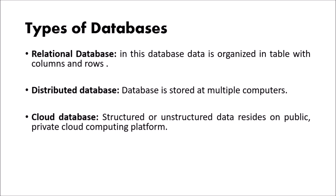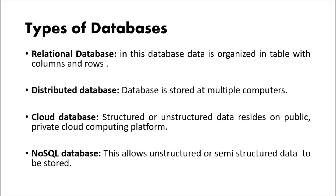The third type is a cloud database. If structured or unstructured data resides on a public or private cloud computing platform, that is called a cloud database. For example, books arranged properly on bookshelves in a library is structured, while books at home not properly organized is unstructured. The fourth type is a NoSQL database, which allows unstructured or semi-structured data to be stored — that is the NoSQL database.